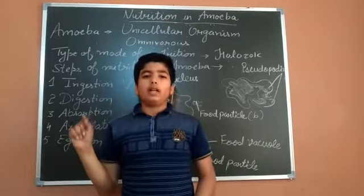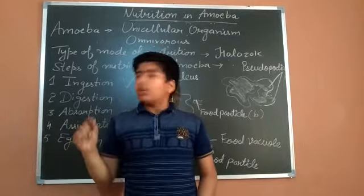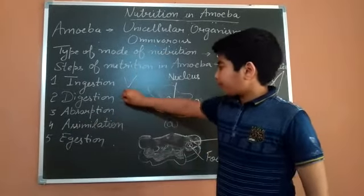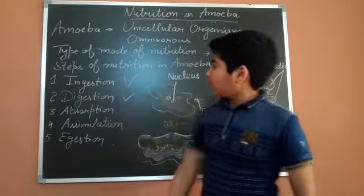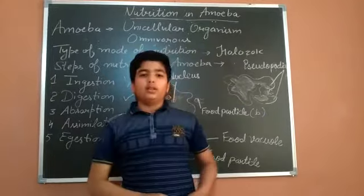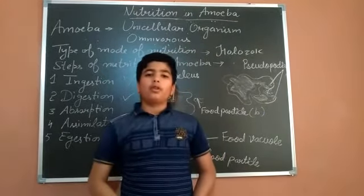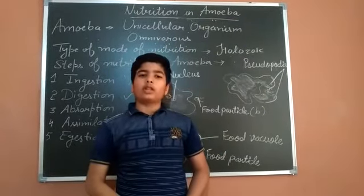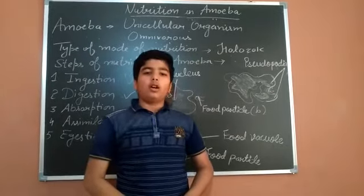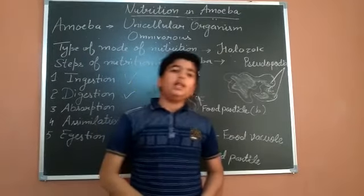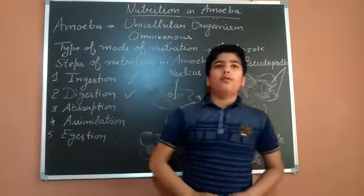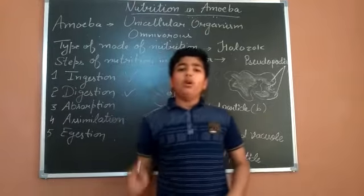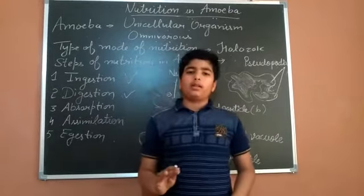The third step is absorption. The digested food from the food vacuole goes to the cytoplasm for absorption. The food vacuole, which contains digested food, transfers it to the cytoplasm.